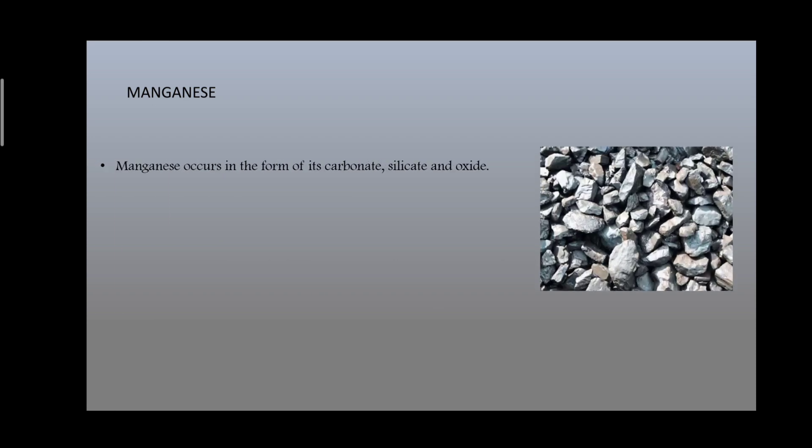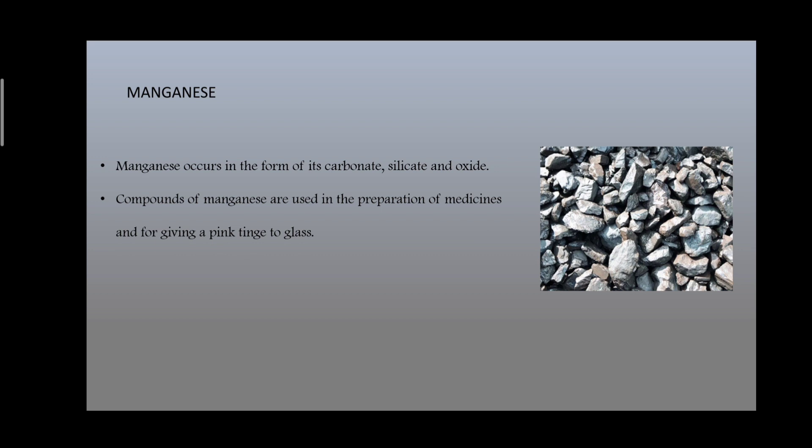Next we have manganese. Manganese occurs in the form of carbonate, silicate, and oxide. These compounds are used in medicines and for giving a pink tinge to glass. Manganese is also used in electrical appliances.